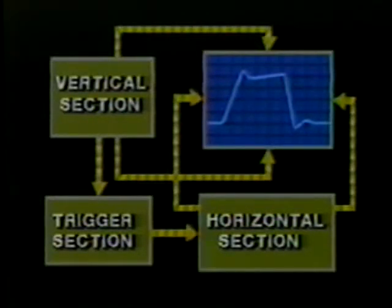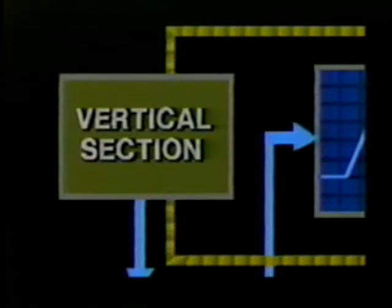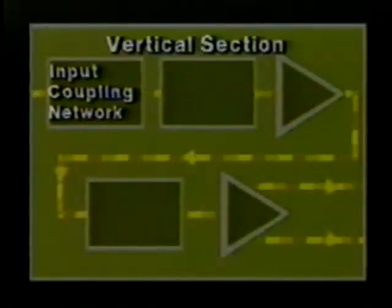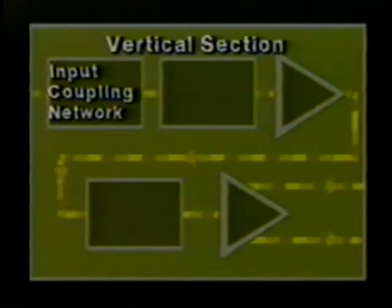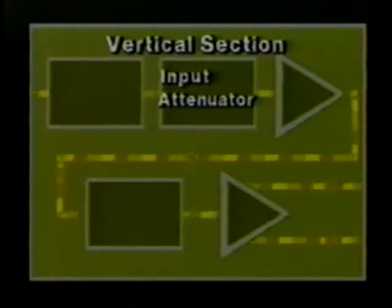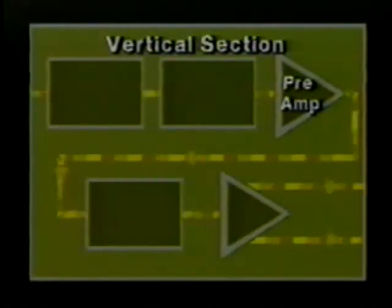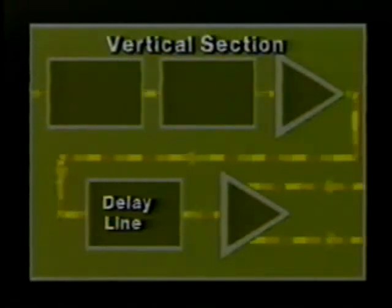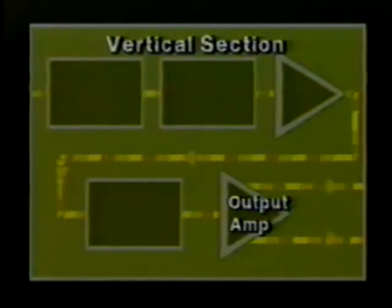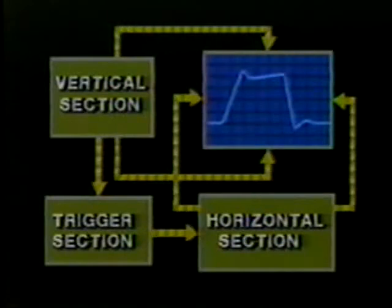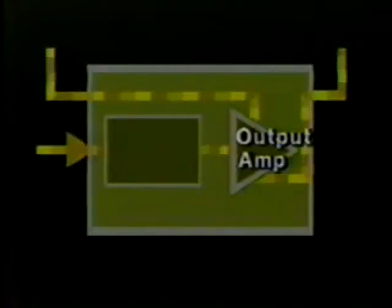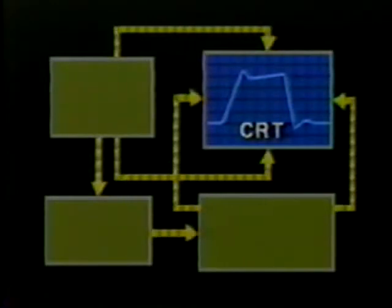This diagram shows the functional blocks commonly found in oscilloscopes like the 2235. The vertical section is composed of the vertical input coupling network, vertical input attenuator, vertical input amplifier, the delay line, and vertical output amplifier. The horizontal section includes the trigger circuit, horizontal sweep generator, and horizontal output amplifier. And finally there's the cathode ray tube, the CRT.